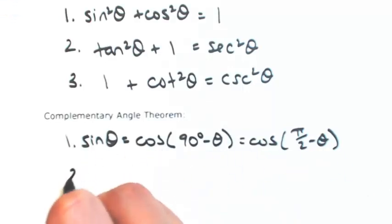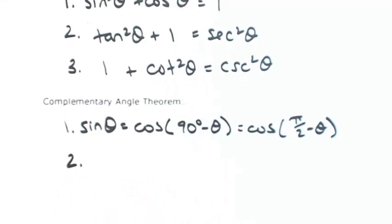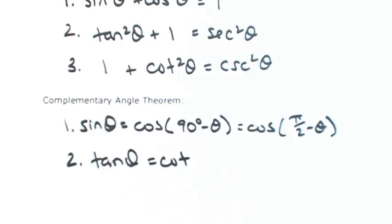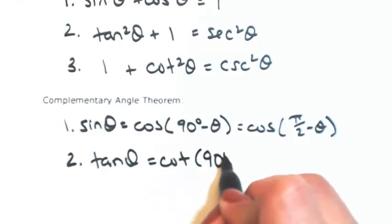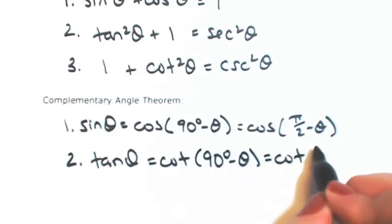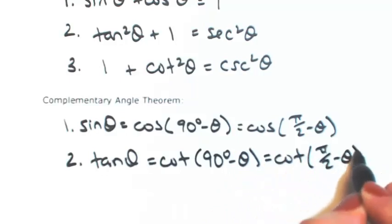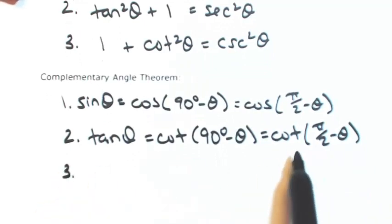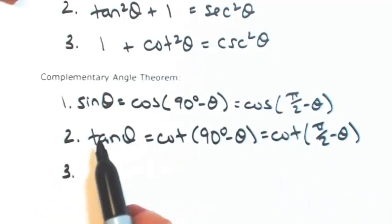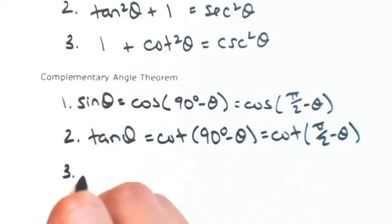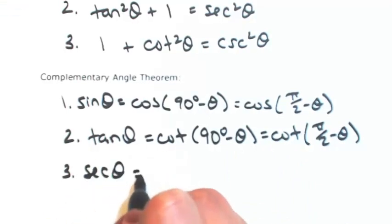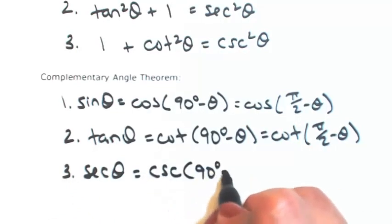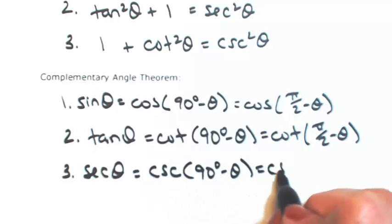Cosine can also be seen as the sine of 90 minus theta. For tangent, tangent of theta equals its co-function cotangent of 90 minus theta. That also means cotangent of theta equals tangent of 90 minus theta. And secant of theta equals its co-function cosecant of 90 minus theta, or in radians.